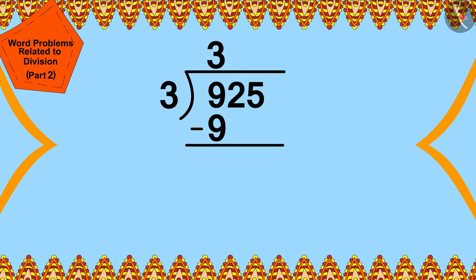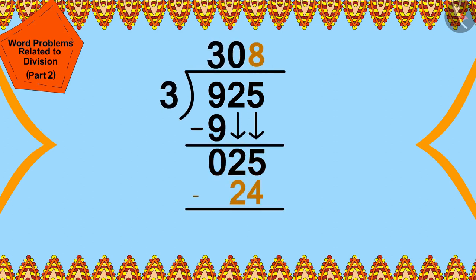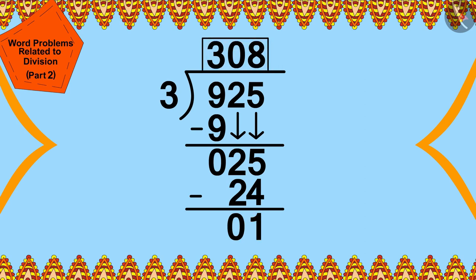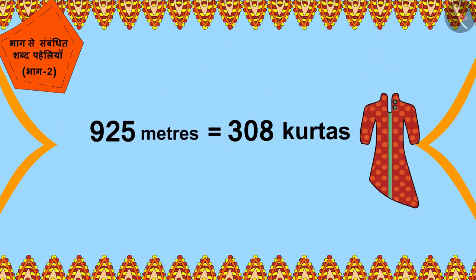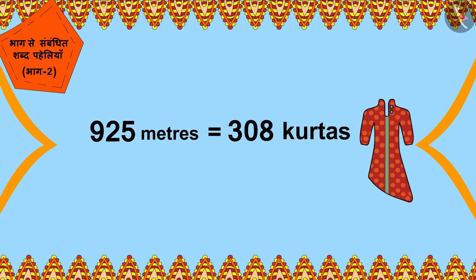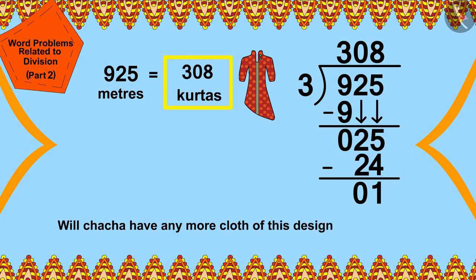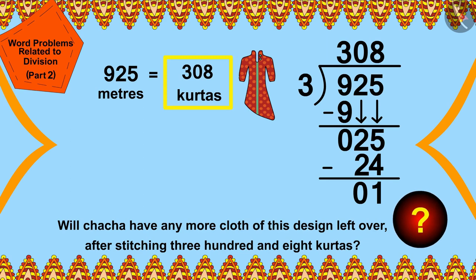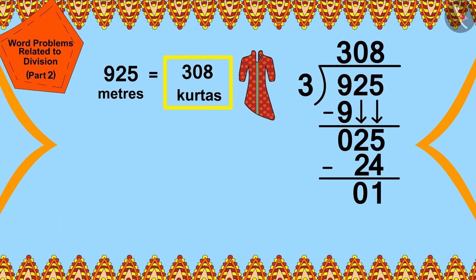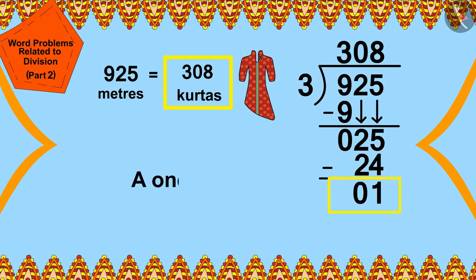We can divide 925 by 3. In this way, Cha Cha can make 308 kurtas for the wedding guests. Will Cha Cha have any more cloth of this design left over after stitching 308 kurtas?